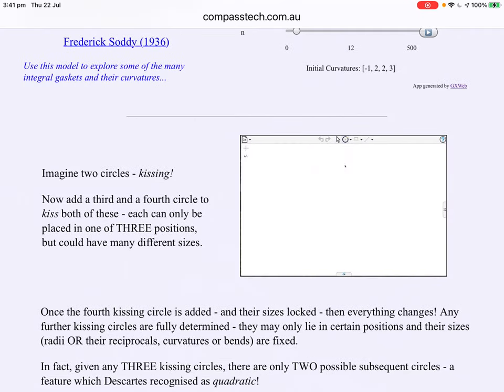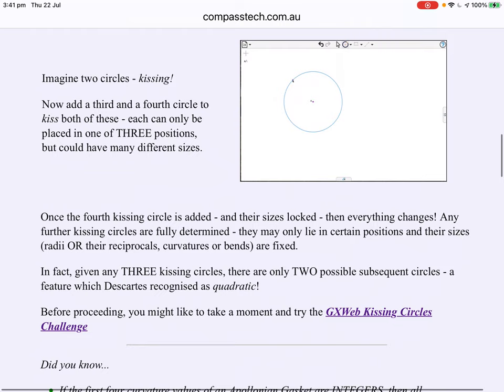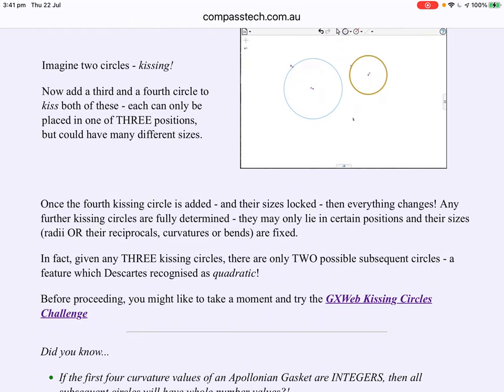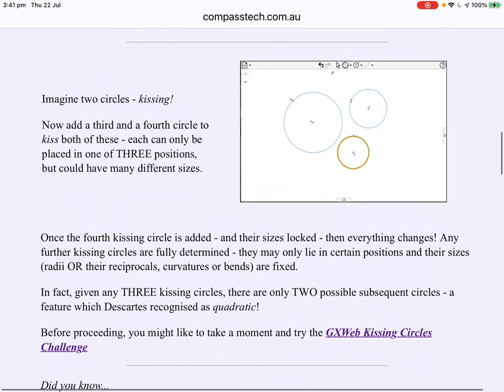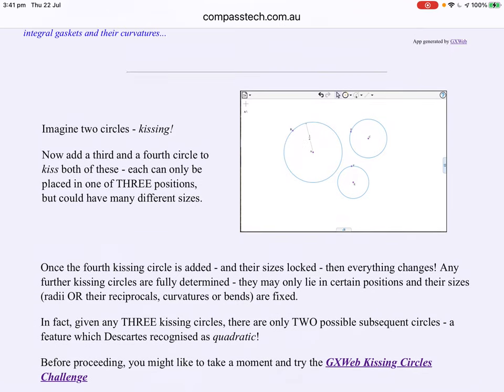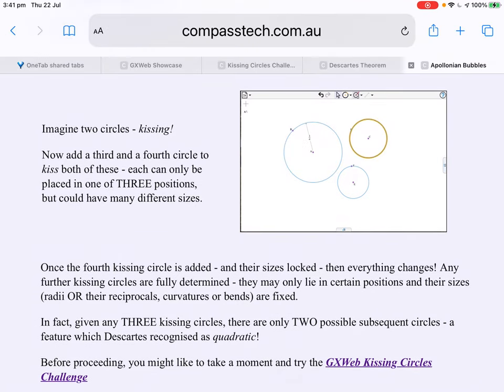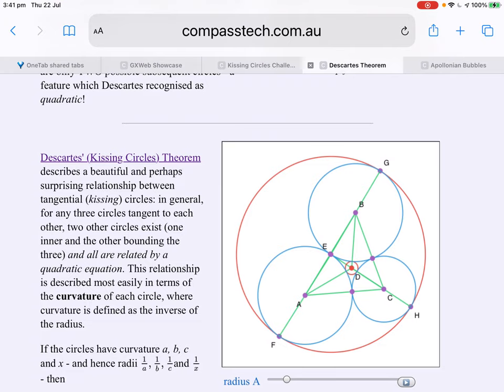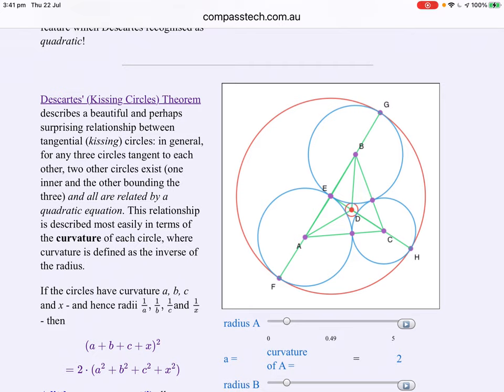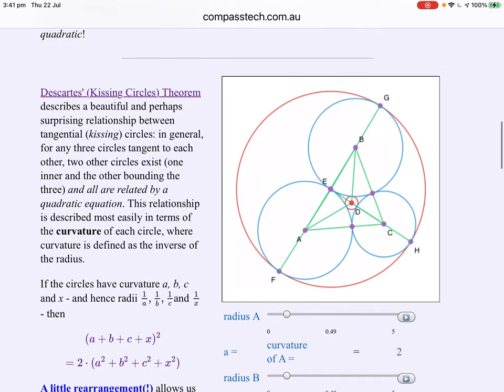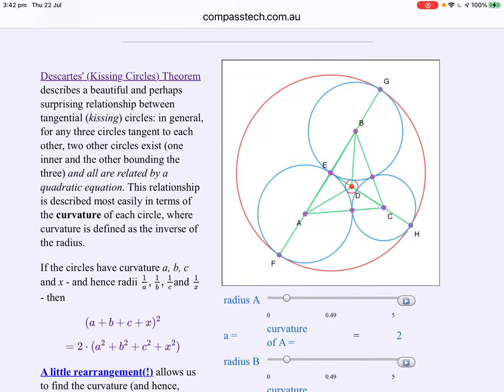You might have noticed at the end that when we asked for the radius of the other circles that we added to our first two, we were given a formula. We were given a formula. That formula is called Descartes' formula. Descartes' kissing circle theorems describes a beautiful and perhaps surprising relationship between kissing circles. For any three circles tangent to each other, two other circles exist. One inner between the three and one bounding the three. And all are related by a quadratic equation.